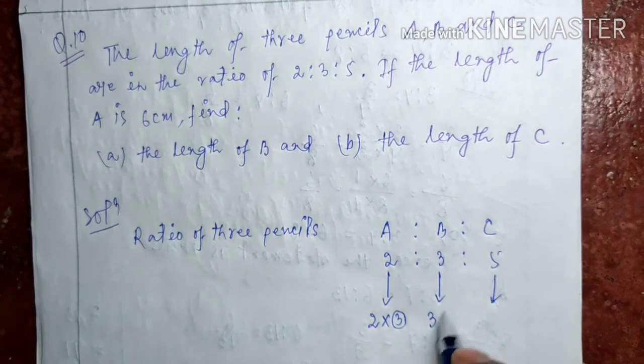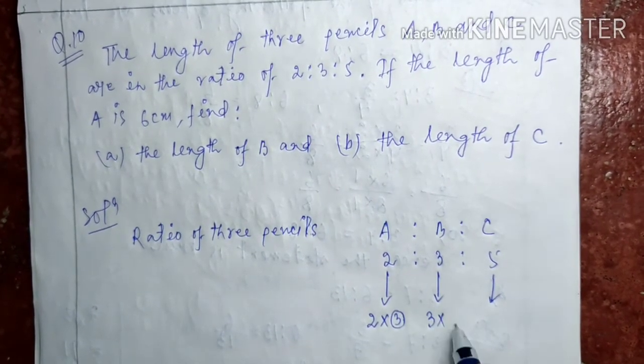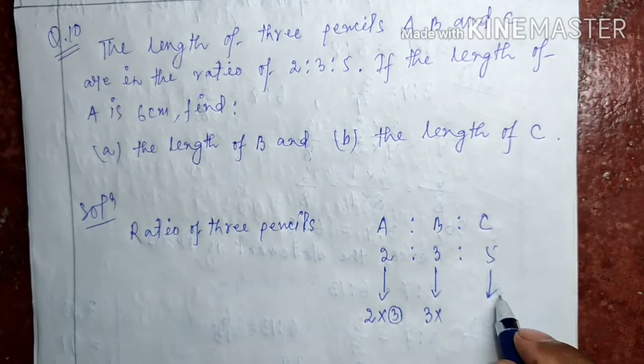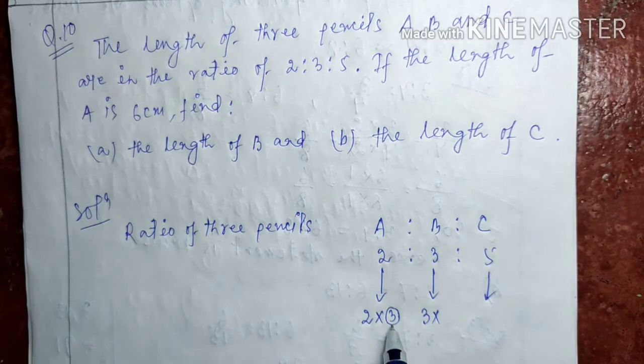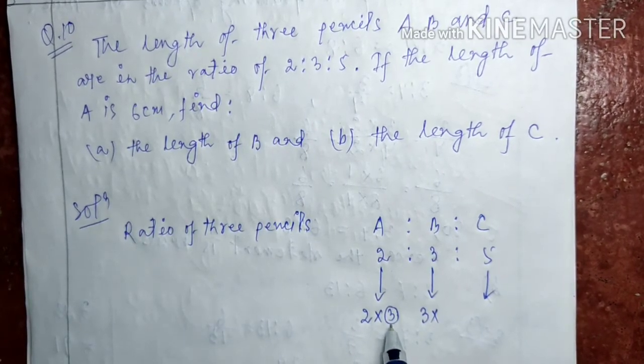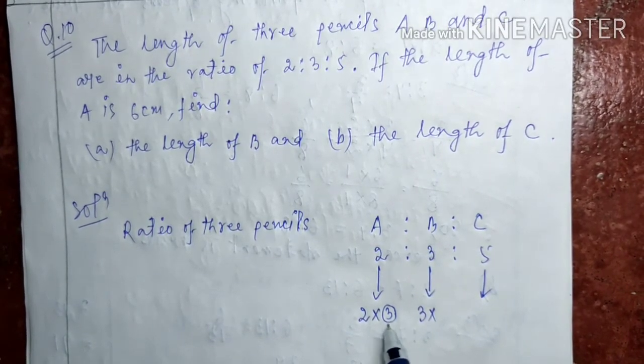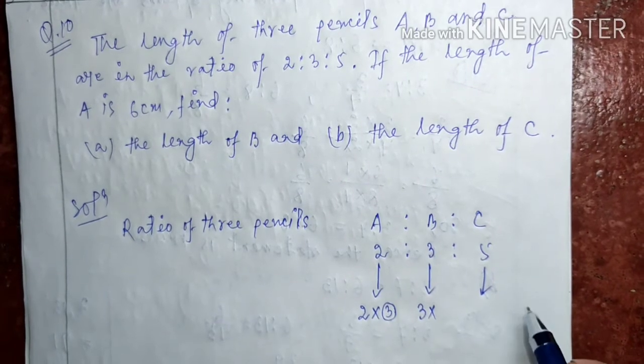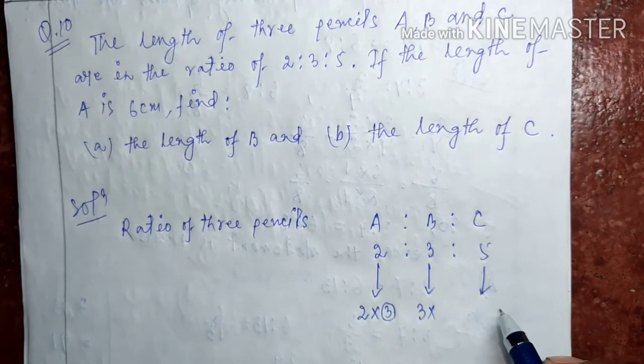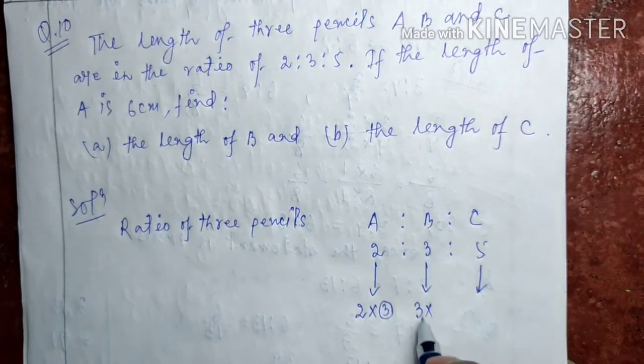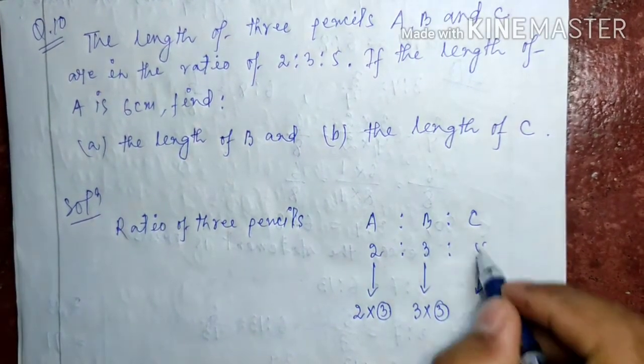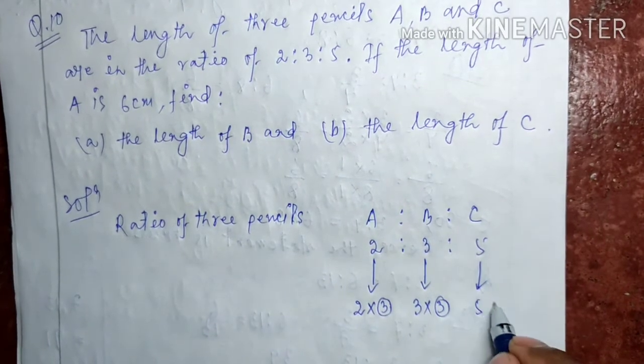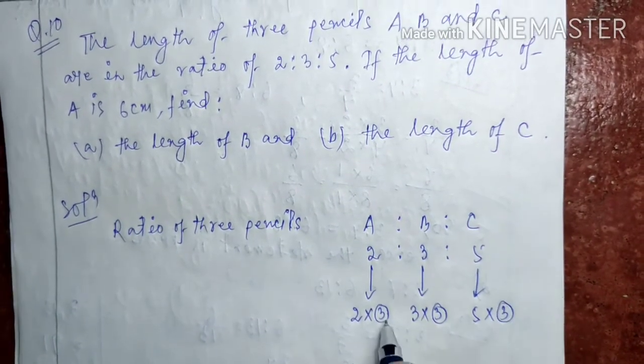In the ratio, for equivalent ratios, when we multiply one number with anything, same number should be multiplied to all the ratios. To all the numbers. Then 3, we multiply it here, same number should be multiplied here. It's 5, bring it down, same number should be multiplied.